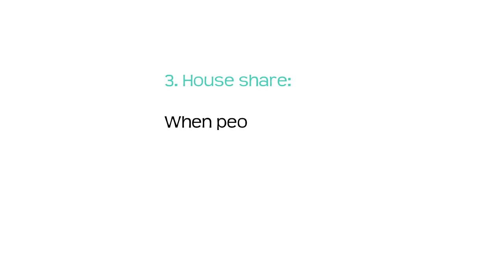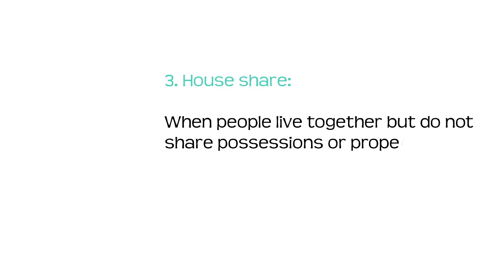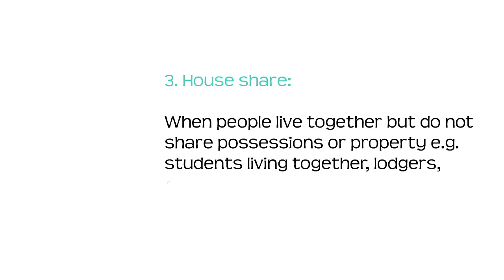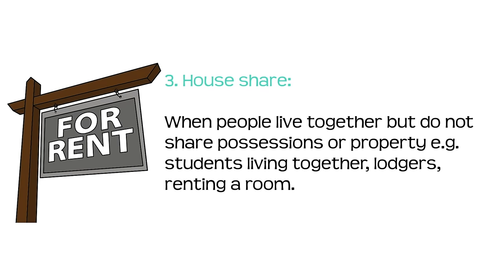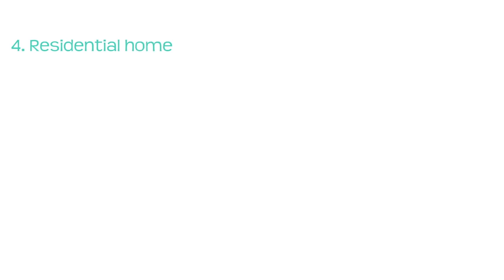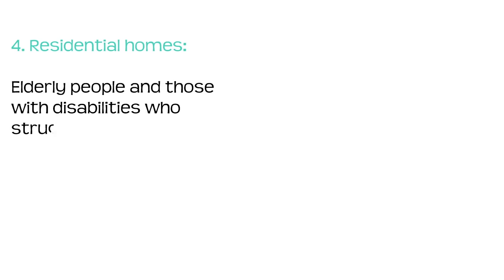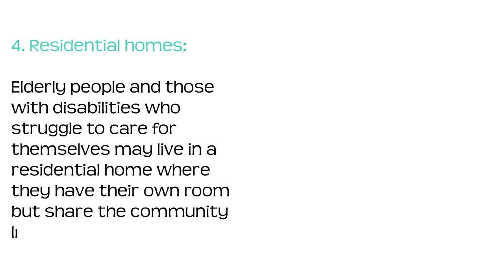Thirdly, house share: a house share is when people live together but do not share possessions or property. For example, students living together or lodgers renting a room. Number four, residential homes: elderly people and those with disabilities who struggle to care for themselves may live in a residential home where they have their own room but share the community life with other residents.